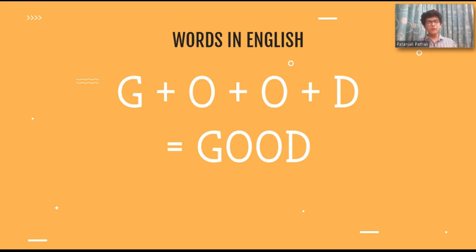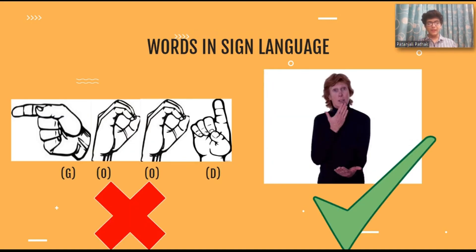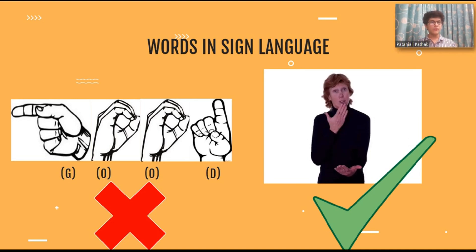Moving on to the language itself, I'll point out the differences between a natural language and sign language. We all know a sequence of letters makes a word which has a certain meaning and pronunciation. For example, the word 'good' is a sequence of four letters: G, O, O, and D. It means something of a favorable character. However, in sign language, there is a different gesture for this word altogether. It's not simply spelled out using the alphabets of sign language.